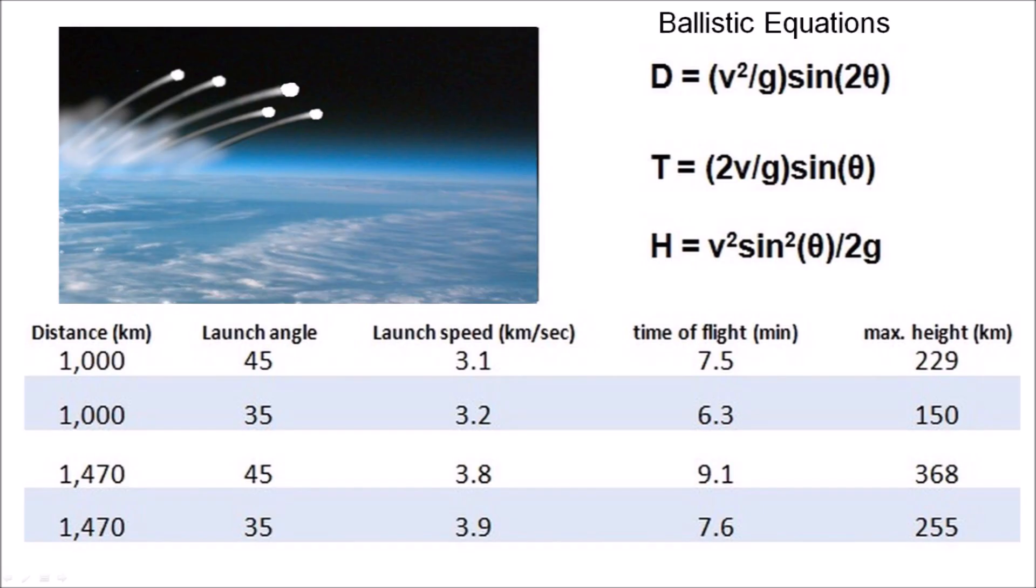The flight times vary from about 6 to 9 minutes and the maximum heights of the trajectories vary from 150 to 368 km above the surface of the Earth. These calculations indicate that all the Carolina Bays and the Nebraska basins would have been created within 6 to 9 minutes after the extraterrestrial impact on the Laurentide Ice Sheet.